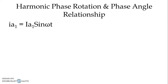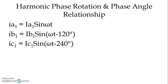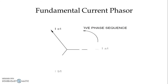Considering the expression for the fundamental waveform of the current, we have Ia1 = Ia1 sin(ωt), Ib1 = Ib1 sin(ωt − 120°), and Ic1 = Ic1 sin(ωt − 240°). The minus 120° and minus 240° indicate the current is lagging behind the voltage, giving us the ABC sequence, which is our positive sequence. Drawing the fundamental current phasor, we have Ia1, Ib1, and Ic1 in positive phase sequence with counter-clockwise rotation.